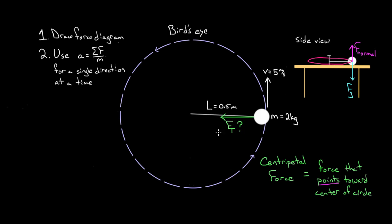Let's draw a quality force diagram. The side view will better illustrate all the forces involved. We've got the normal force upward and the force of gravity downward. Now I'll draw the tension pointing inward — that's the force acting as the centripetal force. We're going to use Newton's second law for one of the directions. Since we want to find the tension, we'll pick the horizontal direction, which is the centripetal direction — into the circle.